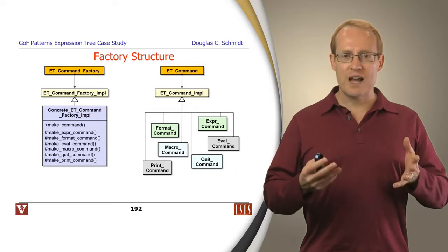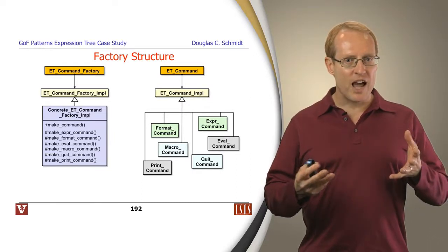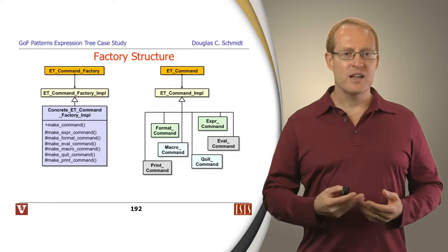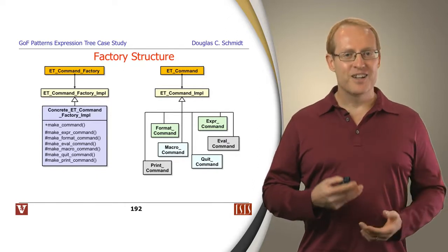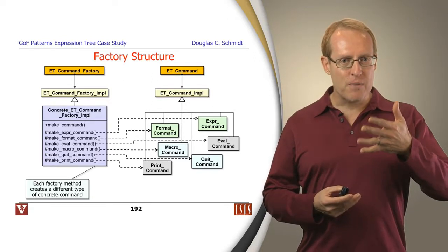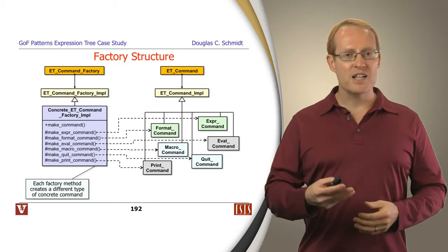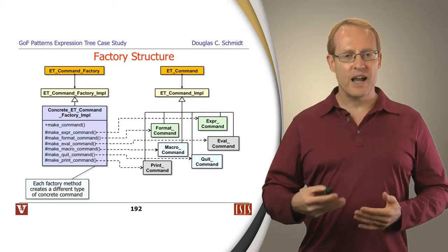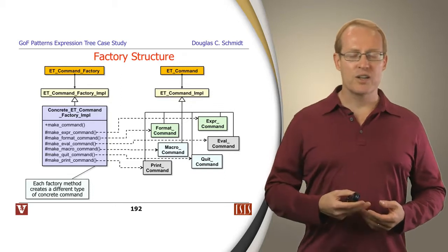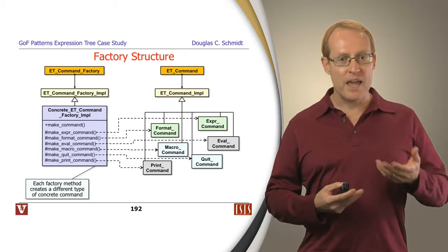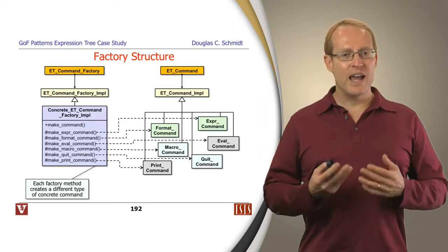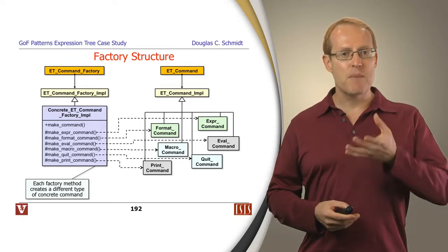Here's a picture that illustrates how this all plays out. We end up with some parallel hierarchies — the command factory hierarchy and the command hierarchy. Not surprisingly, the command factory is used to create the various kinds of commands. Each factory method in the command factory is responsible for creating the corresponding type of subclass of the command implementation hierarchy. The expression command is created by the make expression command factory method, the print command by the make print command method, and so on. All these are rolled up and accessed via the make command method.